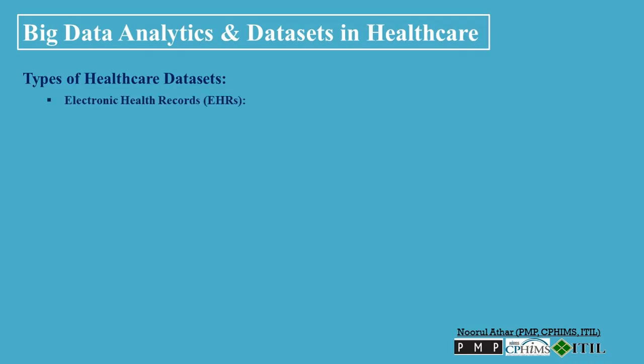Types of Healthcare Datasets: Electronic Health Records (EHRs) — Description: comprehensive data about patient demographics, medical history, test results, medications, immunization dates, allergies, radiology images, and other personal health information. Use: enhance patient care, support clinical decision-making, improve coordination, and facilitate research.